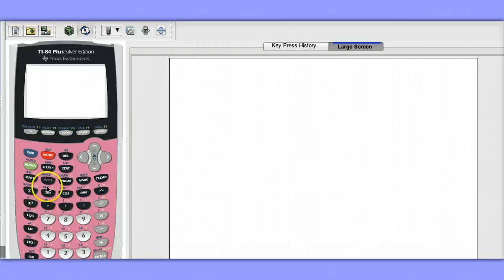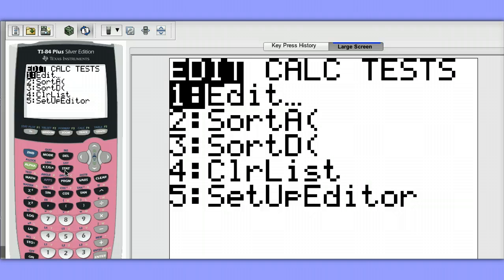Let's take a look at how to do a two-sample t-test. We'll use the bounty and generic paper towel data that's already in our calculators in list 1 and list 2 from the notes in class.